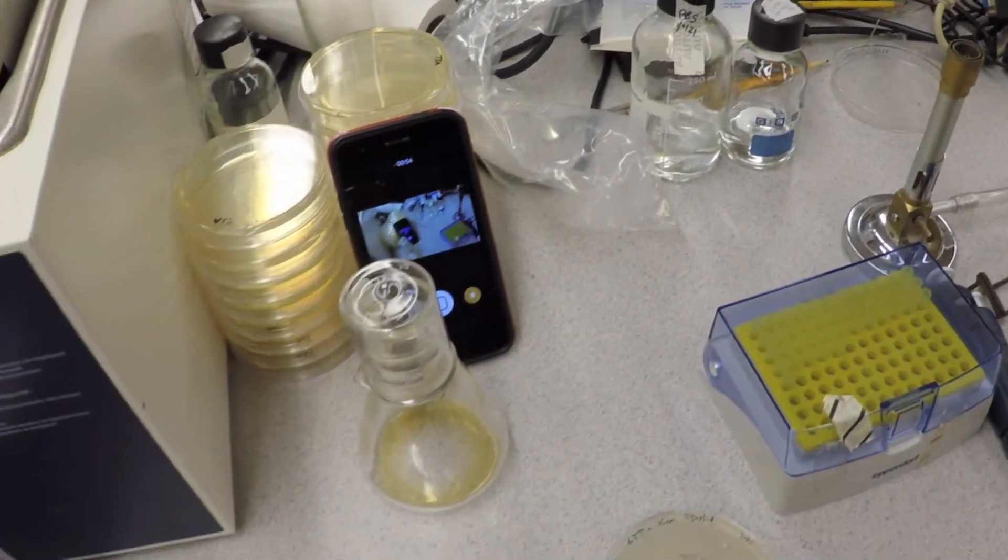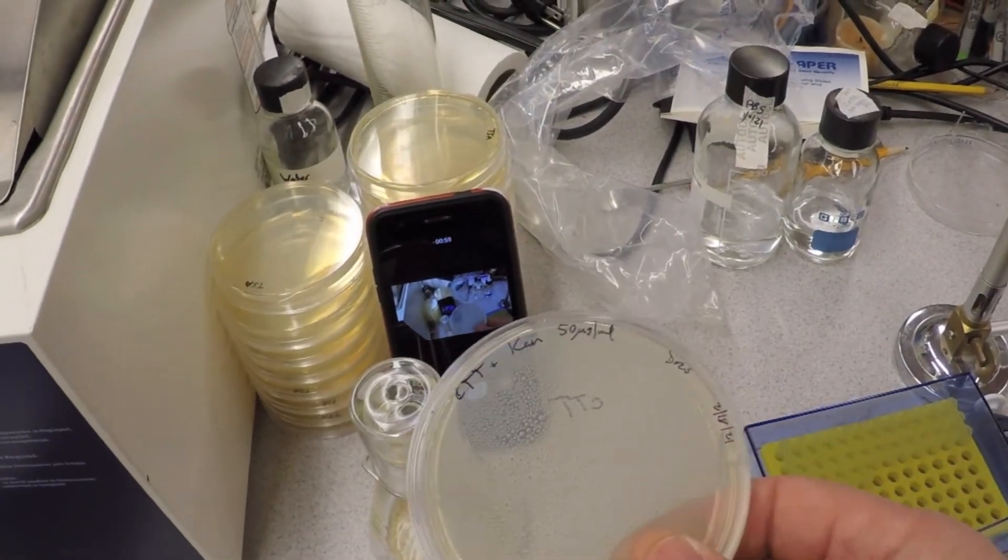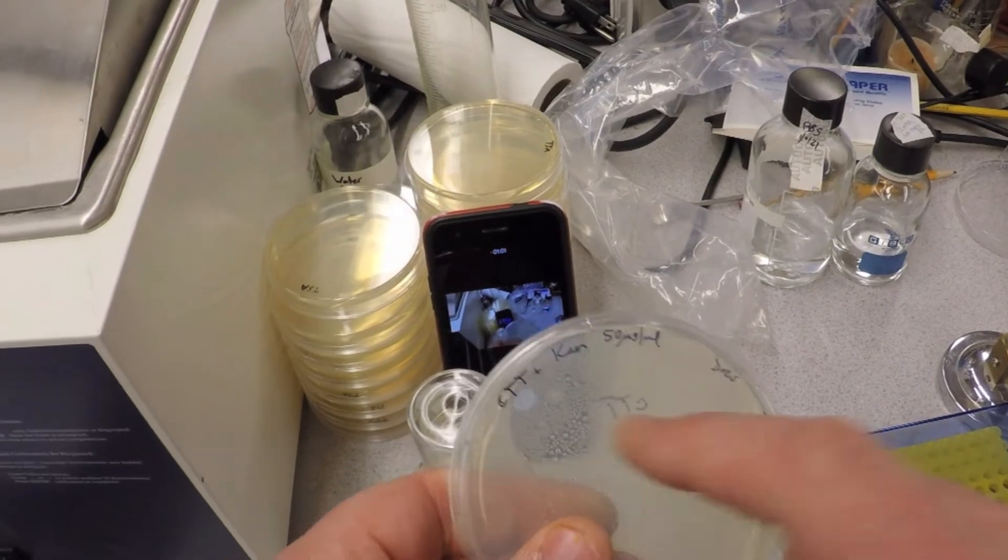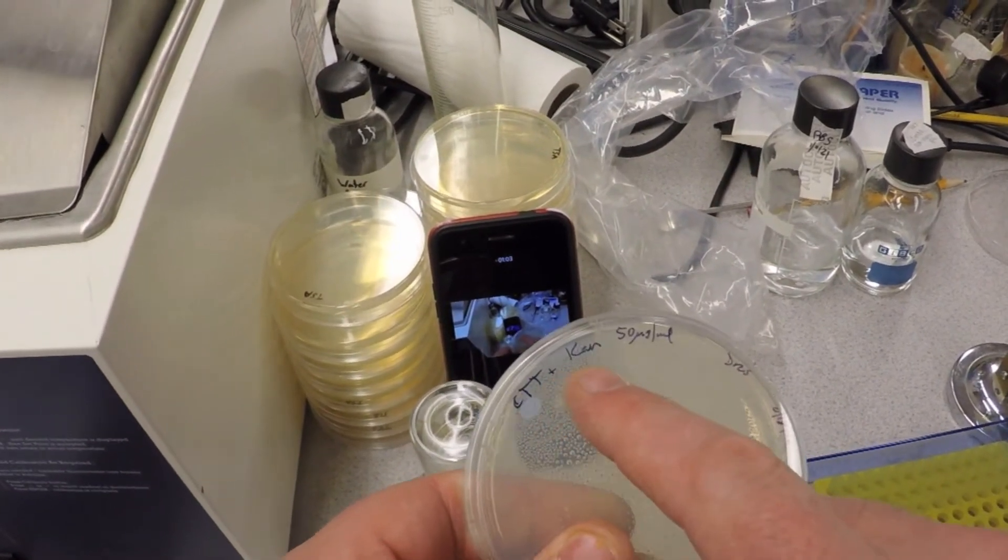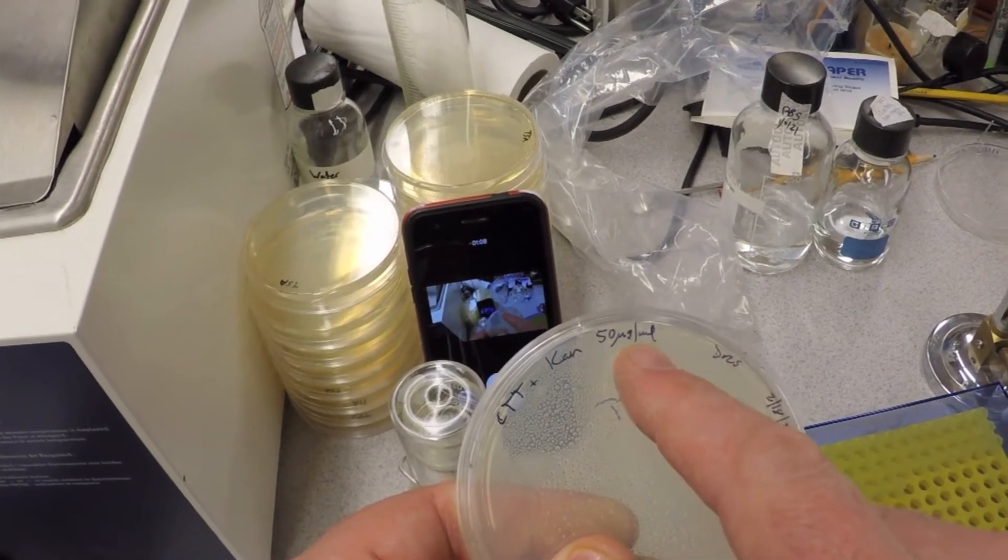Now to put them onto a plate that has selection, we are going to give you what are called CTT plates with kanamycin. The final concentration these plates is 50 micrograms per mil.